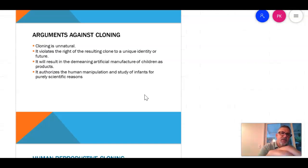Arguments against cloning. All right, should we human clone? So the arguments. Cloning is unnatural. It violates the right of a clone to a unique identity. So if someone knows your clone, does it violate autonomy? It will result in demeaning artificial manufacture of children as products. All right. If you can order a child as a product, would you treat it less than if it was your own?